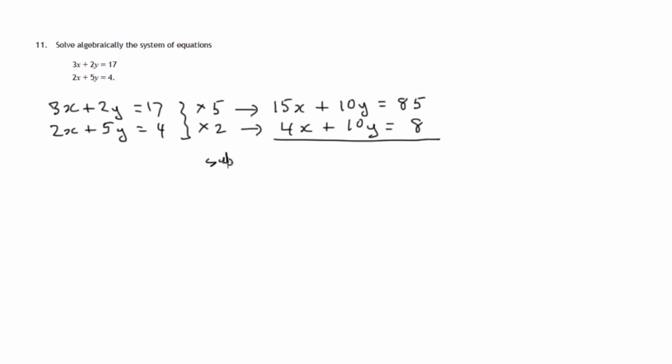So we'll subtract again. Only time you would add if one was positive, one was negative. So subtracting 4x from 15x is 11x. 10y from 10y disappears, 0. 8 from 85 is 77. Divide both sides by 11. x equals 7.